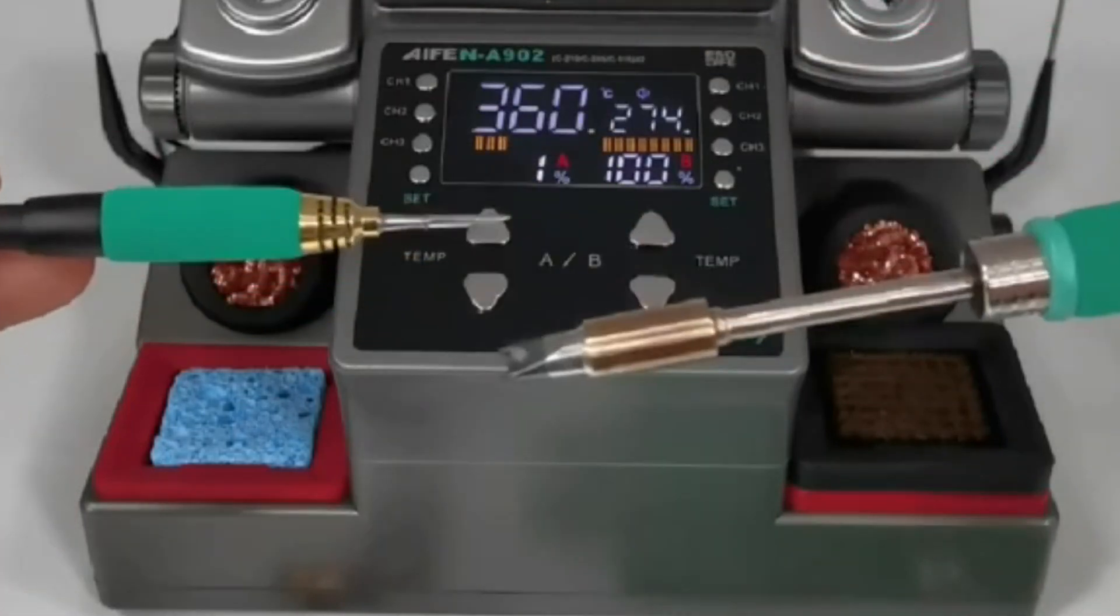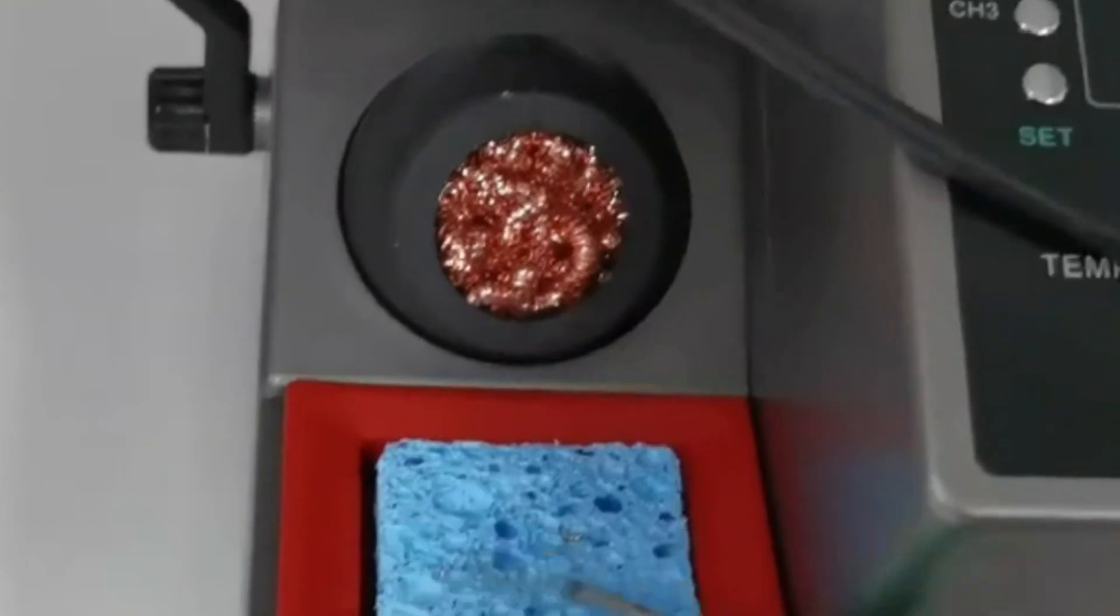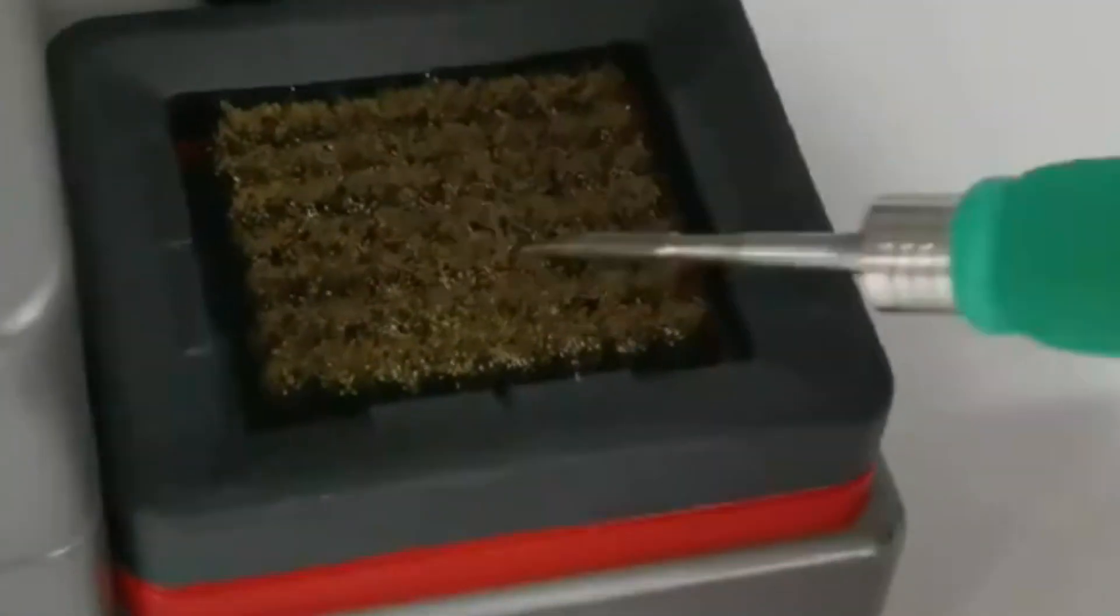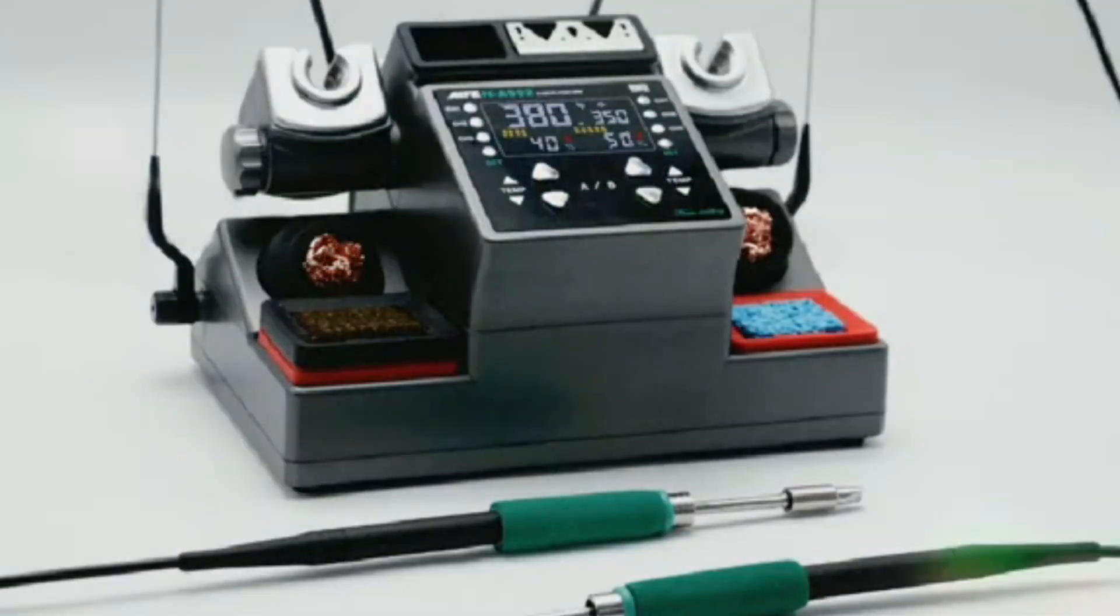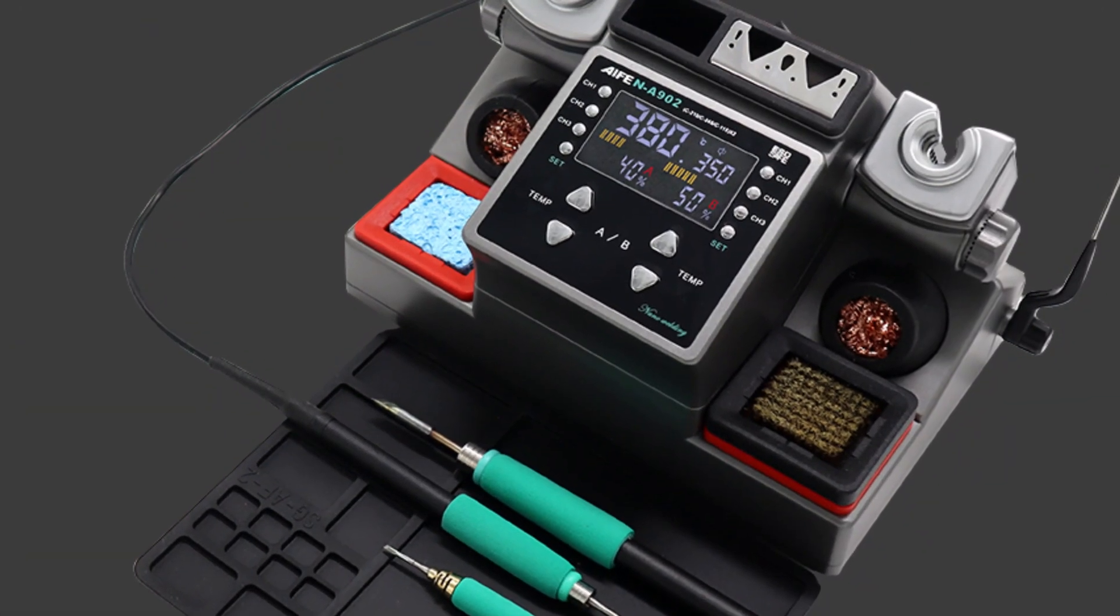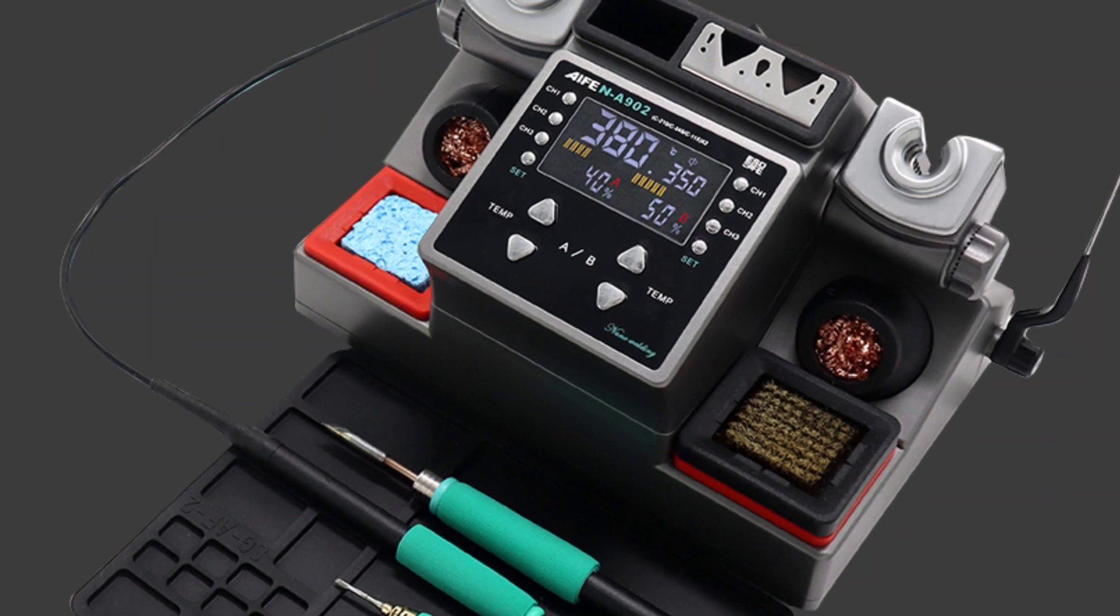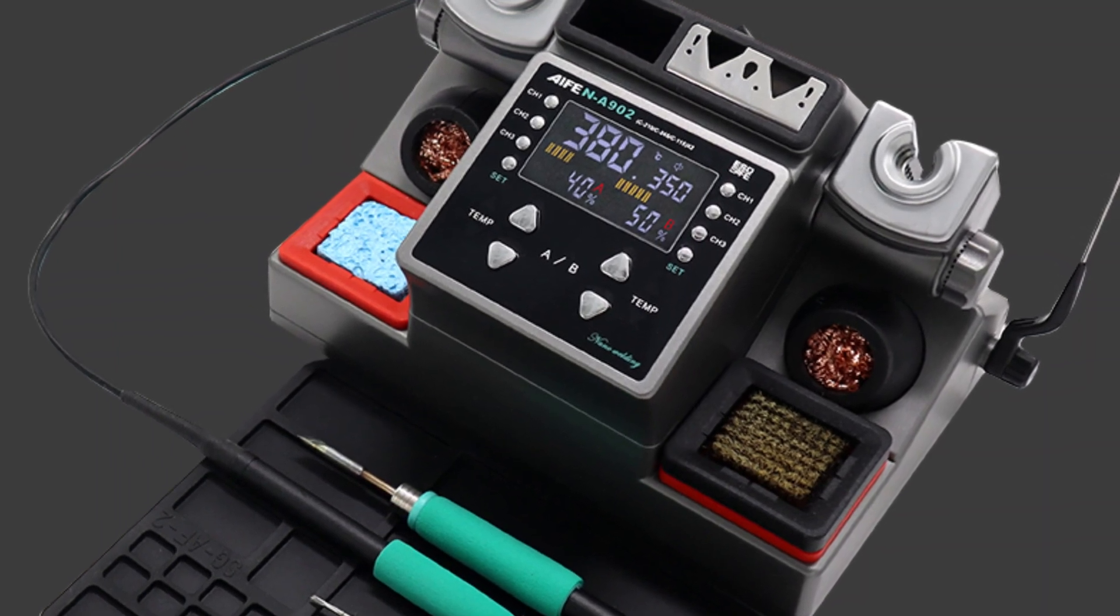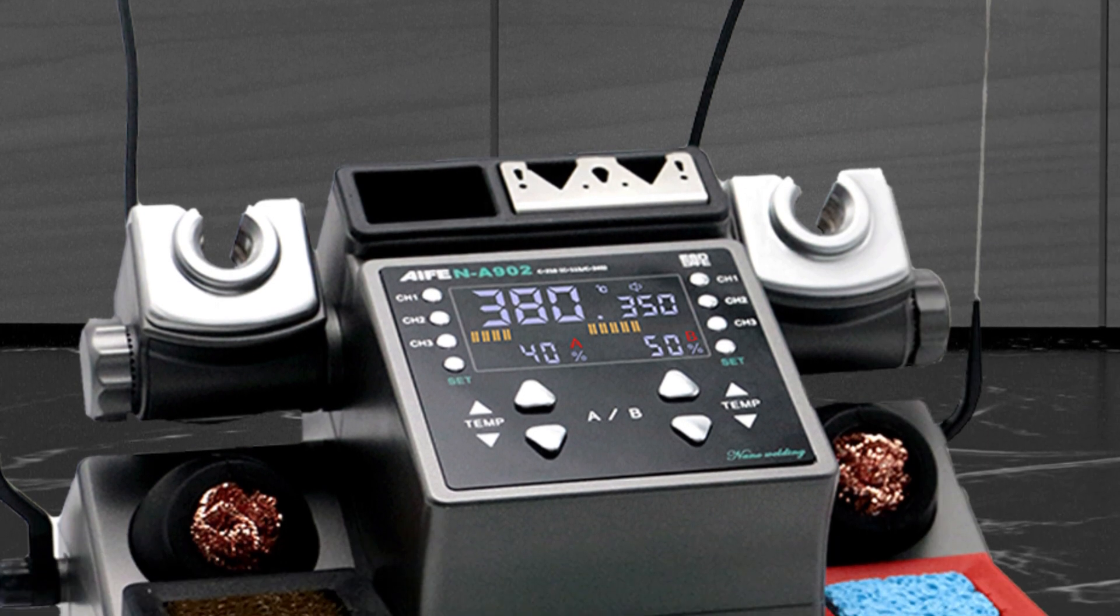The automatic sleep function enhances safety and energy efficiency, while the temperature compensation function ensures consistent temperature throughout the process. The machine also features a mechanical short-circuit protection function, halting the machine if a short-circuit is detected. The soldering station offers six standby temperature settings, temperature calibration, and a built-in buzzer for convenience. The three-stage cleaning system ensures the heating core remains clean and ready for action, ensuring optimal soldering performance.